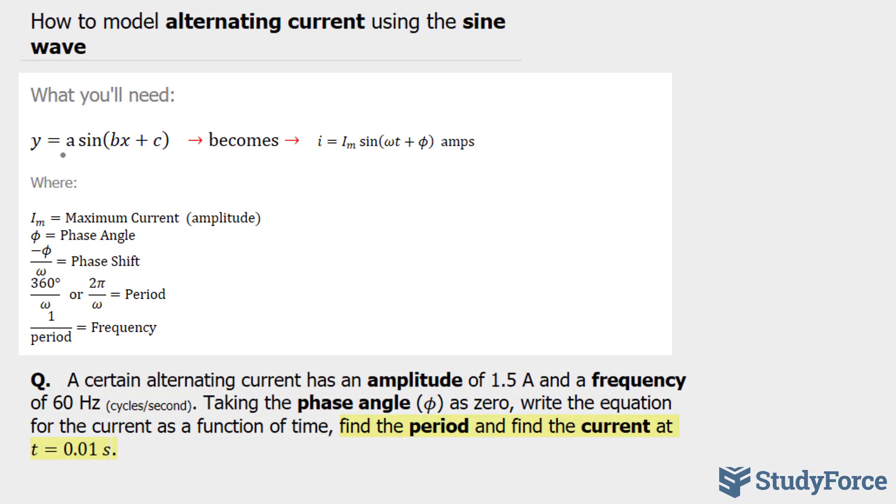In order to model it using alternating current, you need to convert it so that it looks like this, where you have i, which represents your current, is equal to the maximum current times sine omega t plus phi, where omega represents your angular velocity, this symbol represents your phase angle, and your outputs in terms of amps.